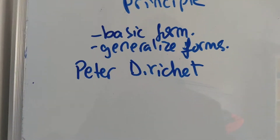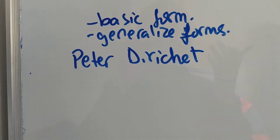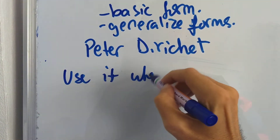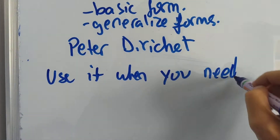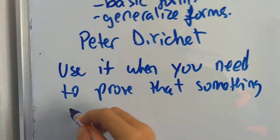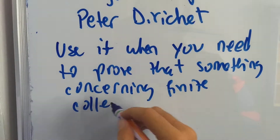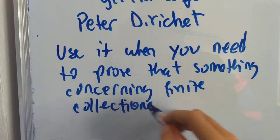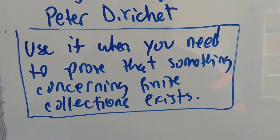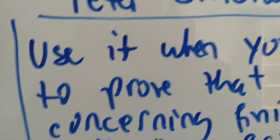It's named after him. It's the kind of thing that is so simple you would never think of it, and it's really easy to understand but may be difficult to apply. Keep this in mind: use it when you need to prove that something concerning finite sets or finite collections of anything exists. The question will ask you to prove that something exists and you have no idea how to build that something — well, often it's provable by Dirichlet's principle.